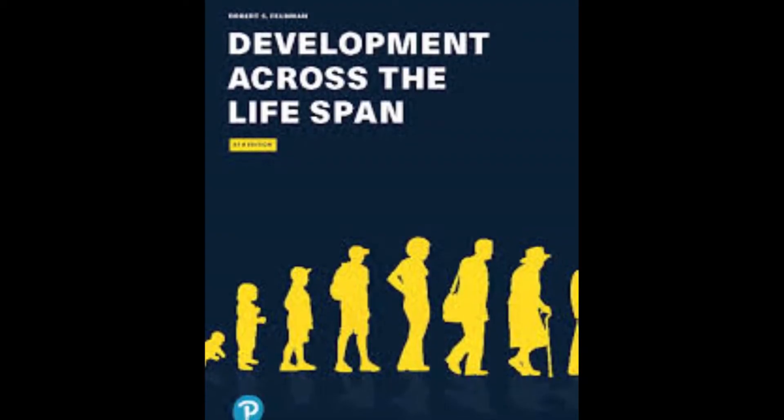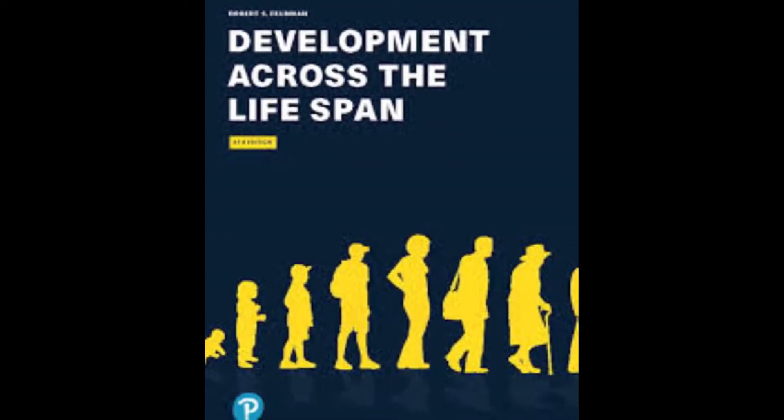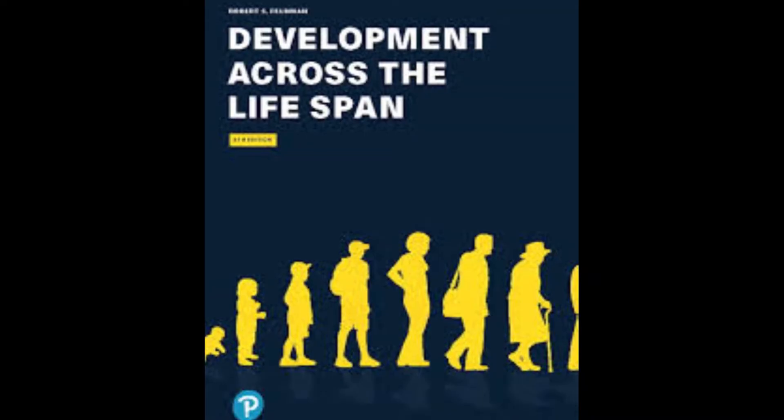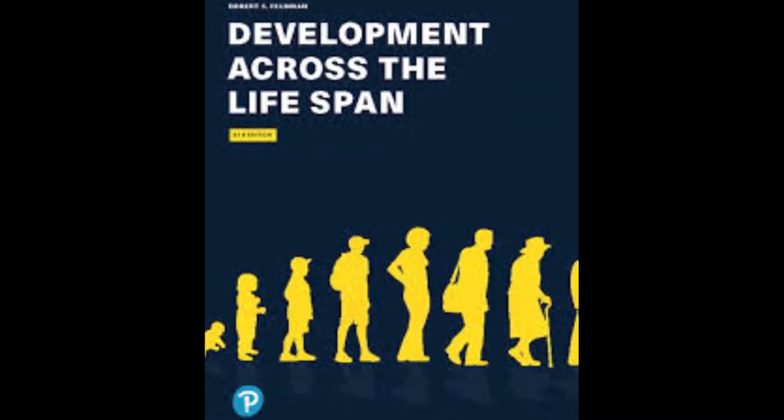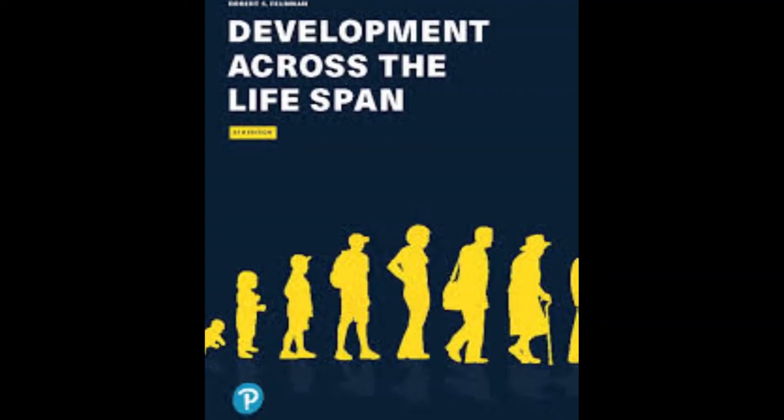Balthus states that there are seven characteristics to lifespan development. Let's take a look at them one by one.